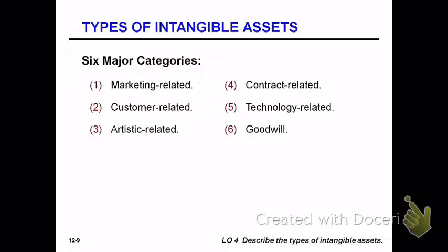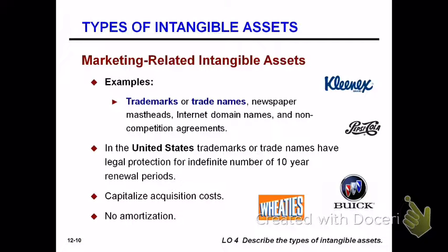There are six categories of intangible assets: marketing-related, customer-related, artistic, contract-related, technology-related, and goodwill. Marketing-related intangibles include trademarks and trade names. These are usually not amortized — they're considered to have indefinite life. Trademarks have legal protection for 10 years, but they can be renewed indefinitely, which is why we don't amortize them.